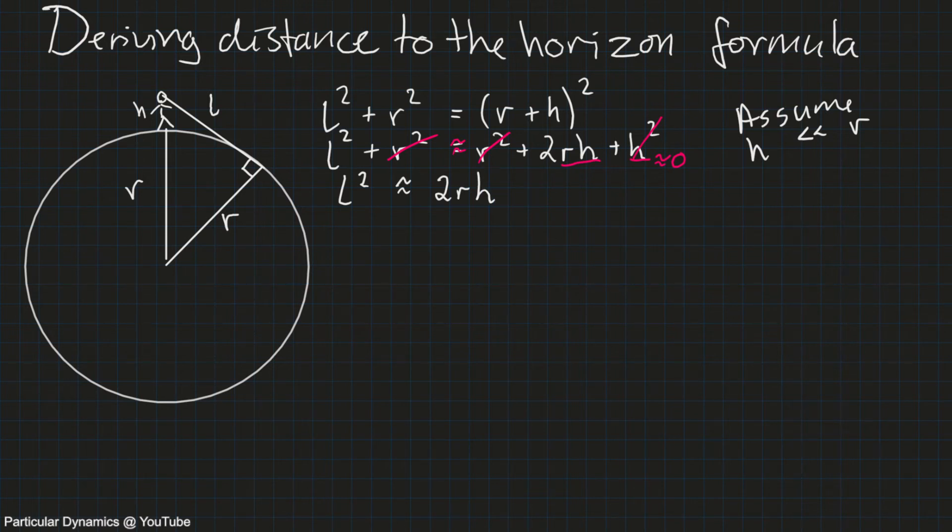Now I'm just gonna do a square root on both sides, get rid of the squared here, like this. And now we have a formula for the distance to the horizon.